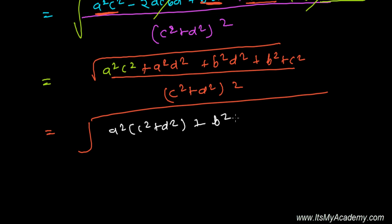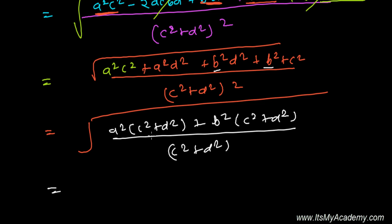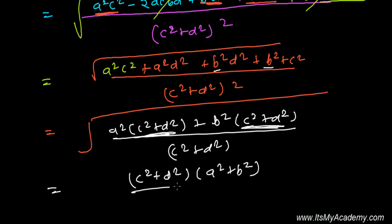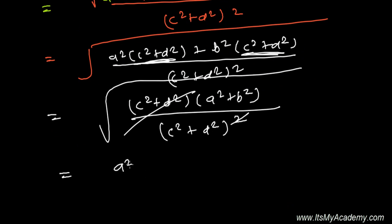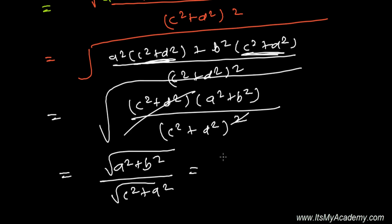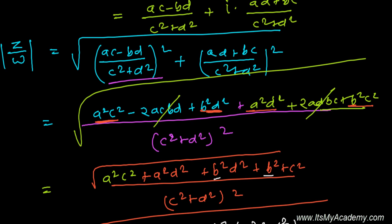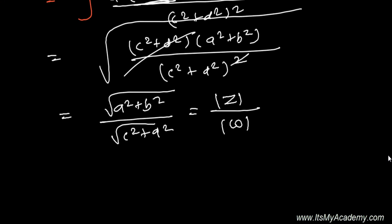The 2ACBD terms cancel, leaving A squared C squared plus A squared D squared plus B squared D squared plus B squared C squared. Taking A squared common gives A squared(C squared plus D squared), and taking B squared common gives B squared(C squared plus D squared). So we get the square root of (A squared plus B squared)(C squared plus D squared) divided by (C squared plus D squared). One factor of (C squared plus D squared) cancels, leaving the square root of (A squared plus B squared) divided by the square root of (C squared plus D squared), which is |Z| divided by |W|, proving |Z/W| = |Z|/|W|.